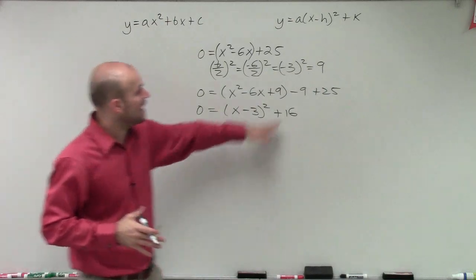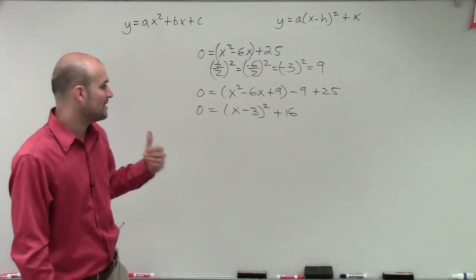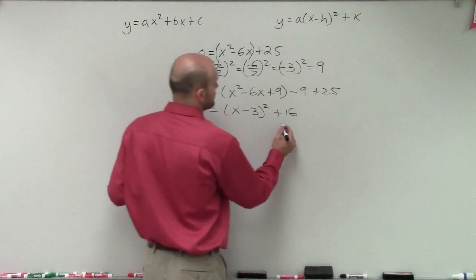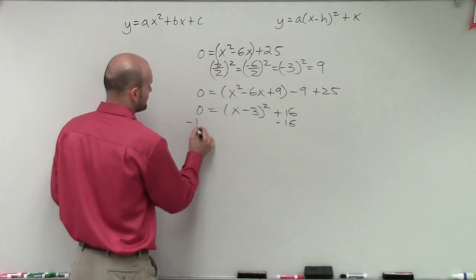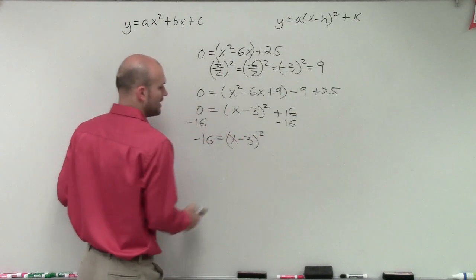Then I can combine these to give me a positive 16. Now, what's so important is now that it's in this vertex form, now what I can go ahead and do is now apply my inverse operations. So what I'll do is I'll subtract a 16. So now I have negative 16 equals x minus 3 squared.